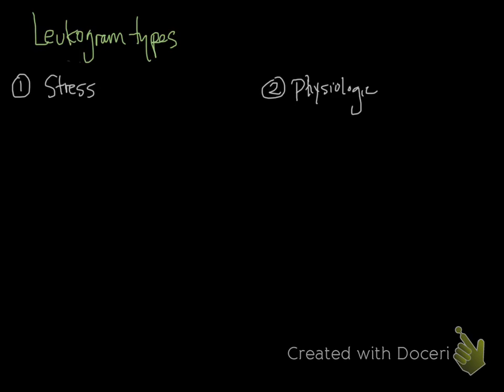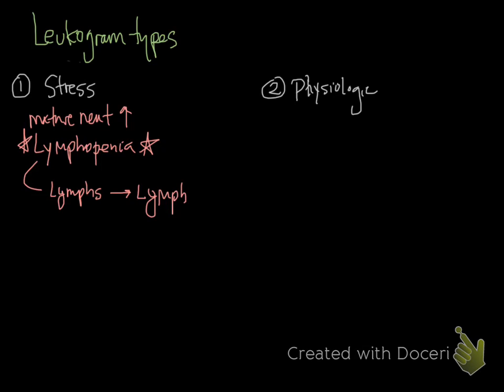We started with stress neutrophilia. A stress leukogram includes a mature neutrophilia, and the defining feature is a lymphopenia. The lymphopenia with stress is the characteristic finding because the lymphocytes go to lymphoid organs and the bone marrow. They mostly go to lymphoid organs such as lymph nodes, which is why you see the lymphopenia.